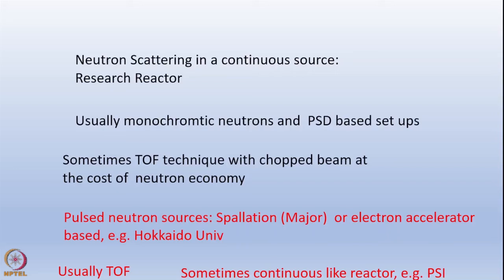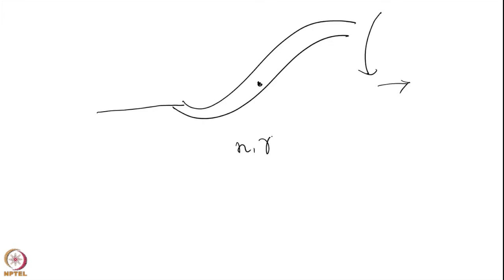The major pulsed sources are spallation neutron sources, though there are still some pulse sources based on electron accelerators. In the case of electron accelerator-based sources, it is a gamma-N reaction: an accelerated electron beam impinges on a metal target, gets decelerated producing Bremsstrahlung gamma rays, and these gamma rays cause photo-fission generating neutrons.